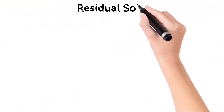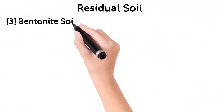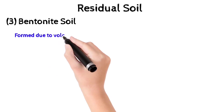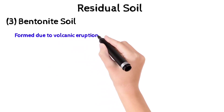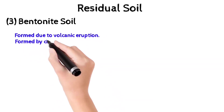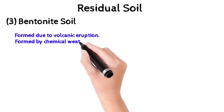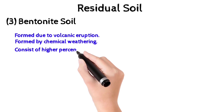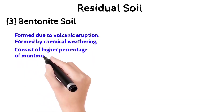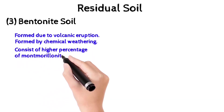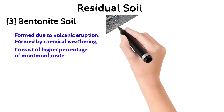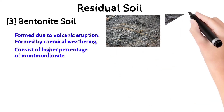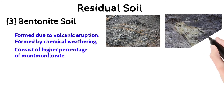The third classification of residual soil is bentonite soil. It is formed due to volcanic eruptions, formed by chemical weathering, and it consists of a high percentage of montmorillonite. Soil that stays at the place of volcanic eruption is called bentonite soil, while soil carried away by water and wind is called top soil.